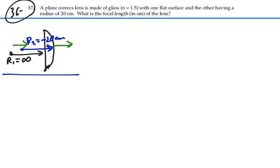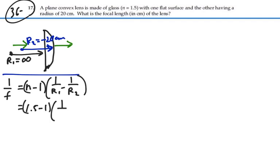Alright, based on that, using the lens maker formula, 1 over F is equal to N minus 1, 1 over R1 minus 1 over R2. So that's going to equal 1.5 for glass, minus 1, 1 over infinity, minus 1 over a negative 20.